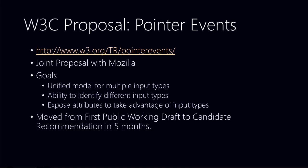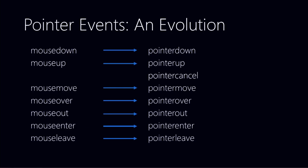This has moved very quickly through the W3C — it was a working draft in March of this year, and in five months it went to candidate recommendation. The good news is it's really an evolution: we've taken what you already know from mouse events, and they're more or less drop-in replacements. The only new addition is pointer cancel — an event you get when someone changes orientation or accidental input is detected, where you want to cancel a particular pointer event.